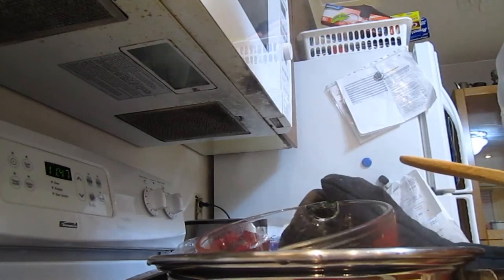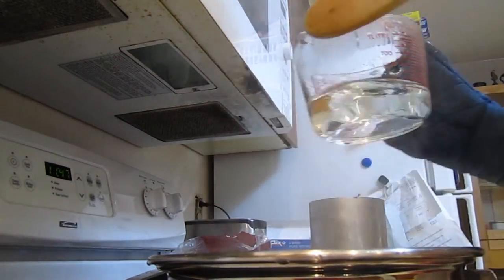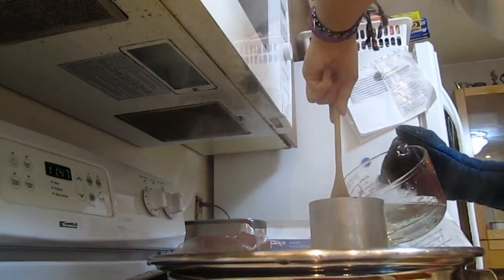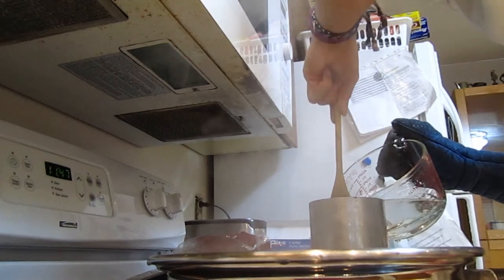The paraffin wax should be melted by this point. Using a wooden spoon or other utensil, pour your wax into the mold until it reaches the bottom of the candle holder inside the mold.